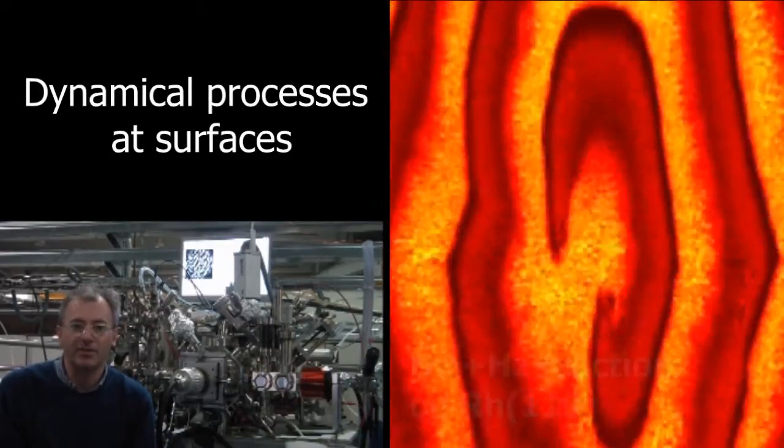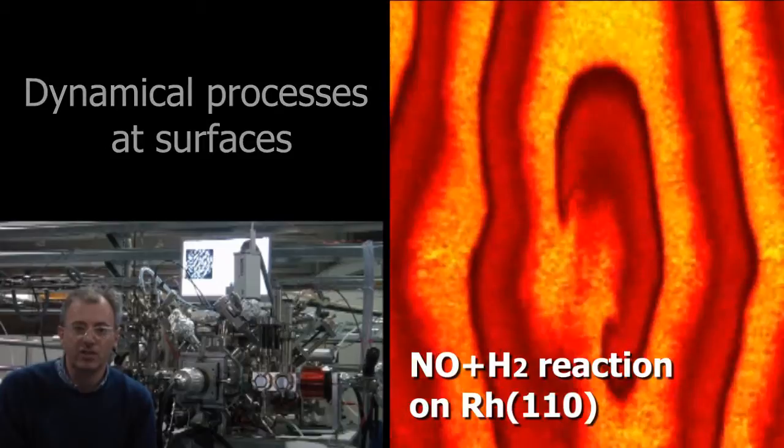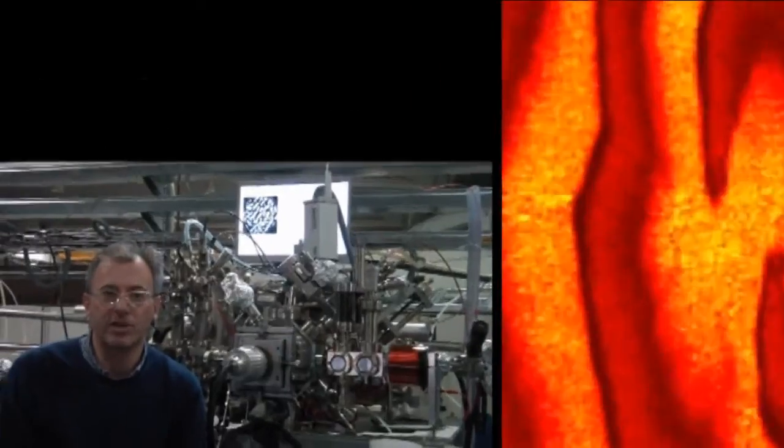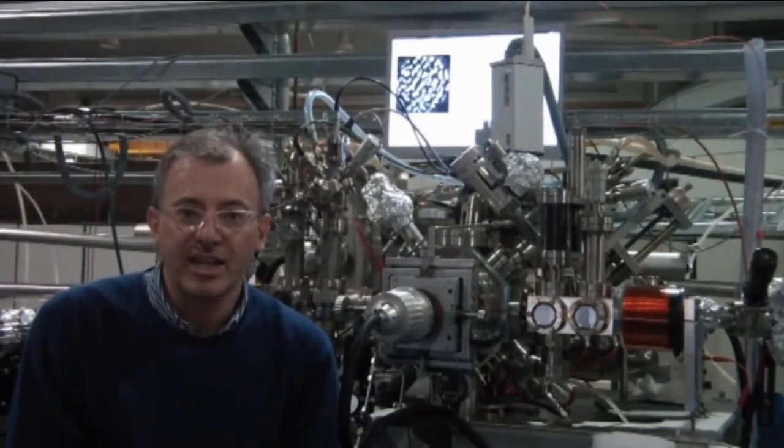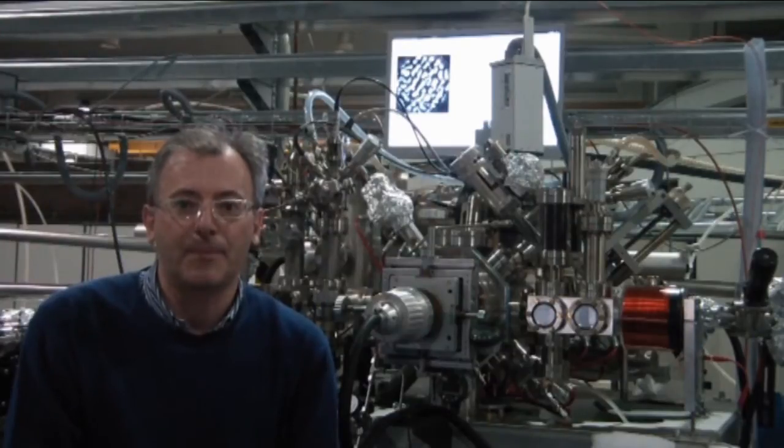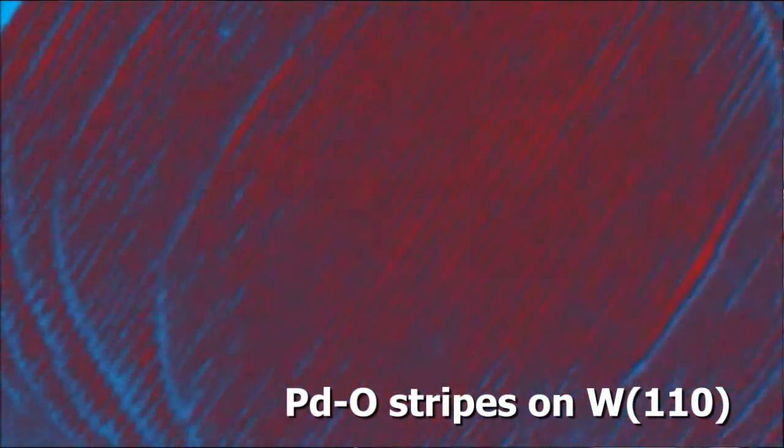for example, growth processes, self-assembly, phase transitions, and also surface chemical reactions. A striking example is provided by striped phase transitions, where atoms form patterns that are periodic and ordered on surfaces, driven by the interplay between short-range and long-range dipolar interactions.